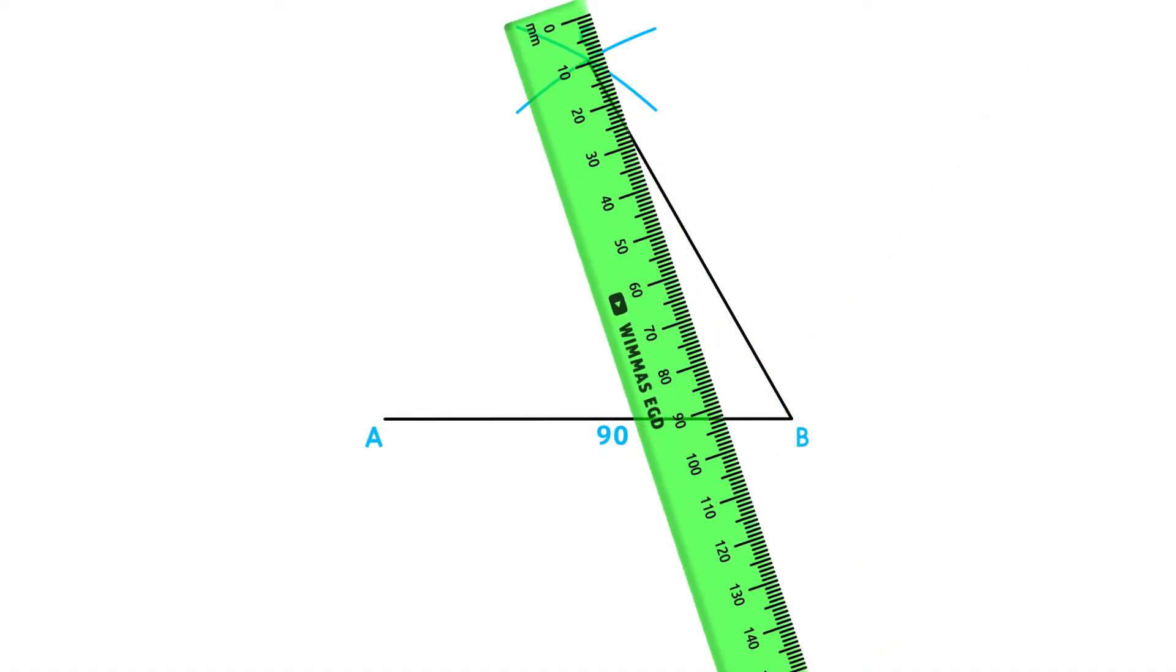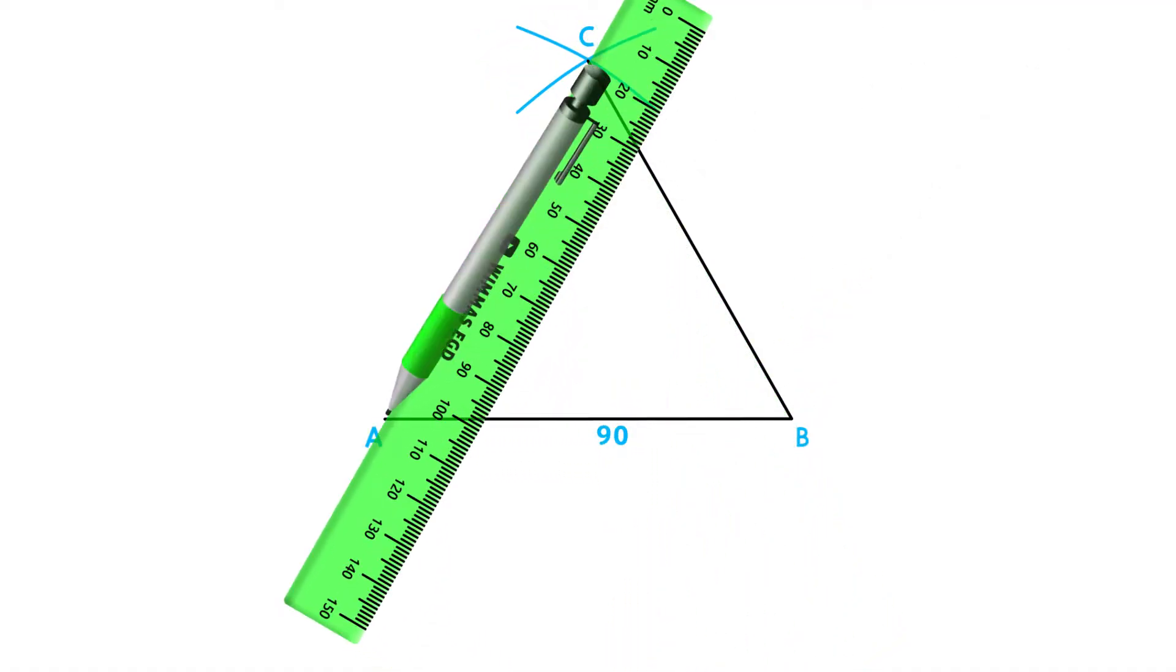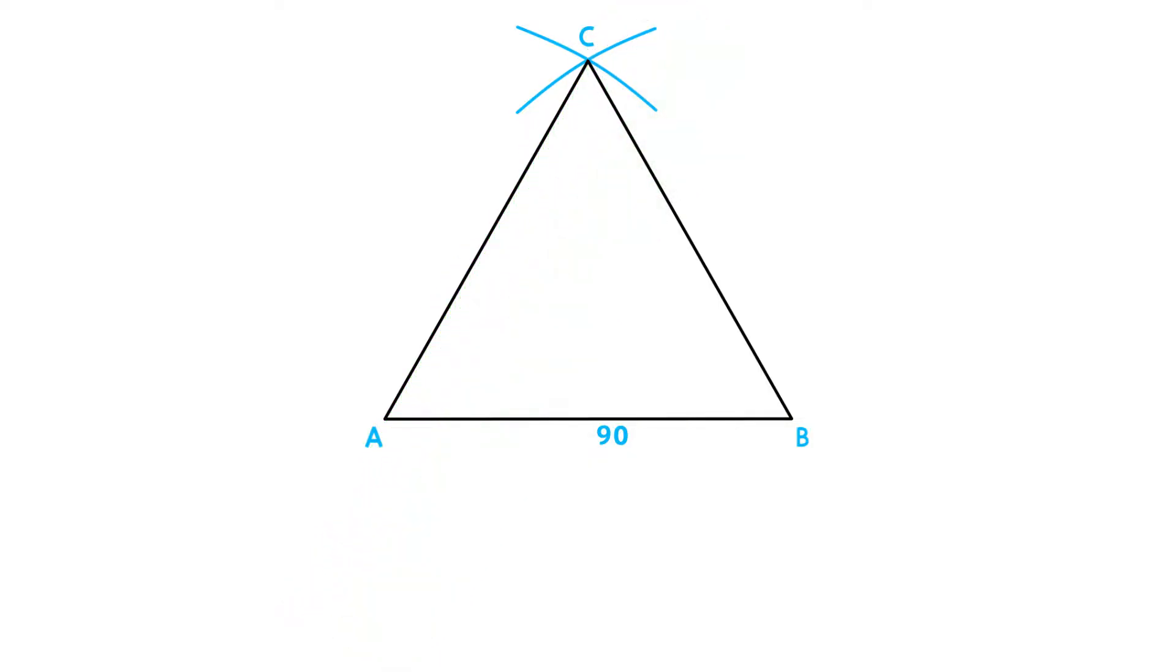Next, we will have to draw a perpendicular bisector on two sides to determine the circumcenter. Let's start with side AB. Place your compass on point B and adjust it to more than half the distance to point A. Draw an arc above and below side AB.